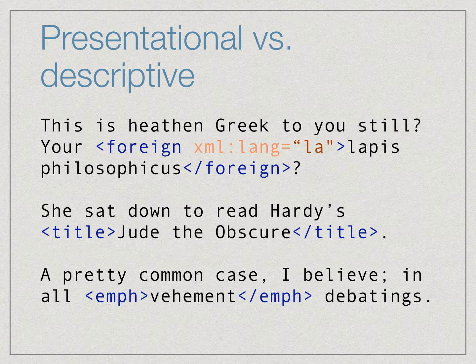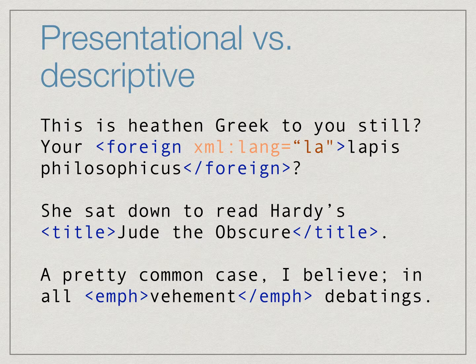The text encoding initiative, or TEI, is an XML vocabulary for encoding scholarly documents such as novels, poems, dramas, dictionaries, and language corpora. TEI has hundreds of very specific tags for elements such as foreign passages, epigraphs, speeches in a drama, stanzas in a poem, and so on. In the example on the screen, the presentational I tags have been replaced by more meaningful semantic tags.